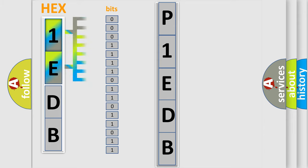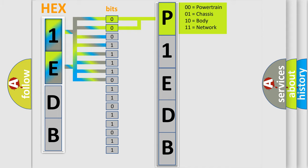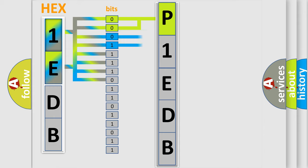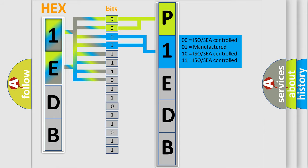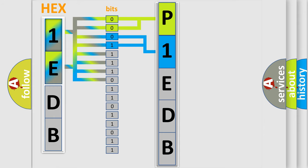The bit has two logical states: zero, meaning low level, and one, meaning high level. By combining the first two bits, the basic character of the error code is expressed. The next two bits determine the second character. The last bits of the first byte define the third character of the code.